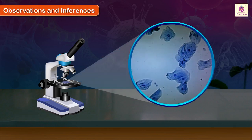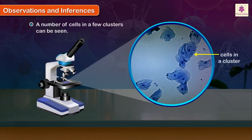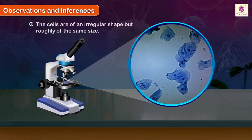Observations and Inferences: A number of cells in a few clusters can be seen. In some clusters, a few cells are in contact with each other. The cells are of an irregular shape but roughly of the same size.